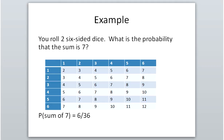Once all 36 sums are listed, to find the probability of a sum of 7, count how many cells show 7 — going up the diagonal, there are 6 ways to get a sum of 7. So the probability is 6/36. Again, leave it as an unreduced fraction to minimize mistakes.